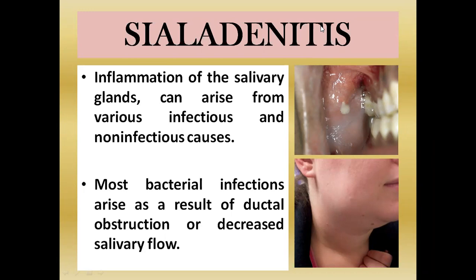Reduction in the flow of saliva causes stagnation of mucins inside the duct systems. One function of saliva is its washing action, which kills or reduces bacterial precipitates. When salivary flow decreases, bacteria accumulate within the mucins inside the salivary duct systems, leading to acute or chronic salivary adenitis — infectious or non-infectious.